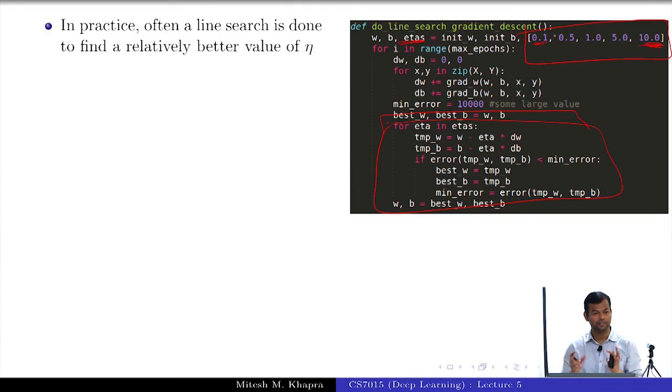You see the advantage of this. Now we are in some way heuristically trying to adapt to the slope of the error surface by just giving it different learning rates.